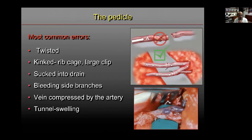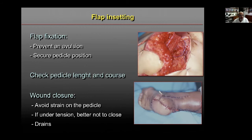Problems related to the pedicle that may require returning a patient to the OR include a twisted or kinked pedicle, suction by a drain, bleeding from side branches, compression of the vein by the artery, or swelling of the underlying tissue compressing the pedicle. After completing the microvascular anastomosis, fix the flap properly to prevent avulsion, secure the pedicle position, check the pedicle length and course, and when closing the wound avoid strain on the pedicle. If there is tension, it's better not to close and use a split-thickness skin graft instead.